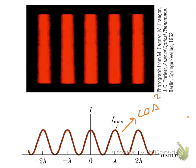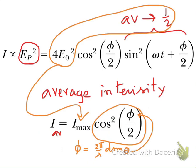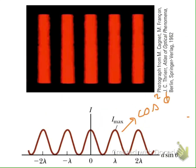In fact, it is cosine squared of phi over 2. This confirms our expectation that we will get the fringe pattern — the bright fringes and dark fringes — from the interference pattern.